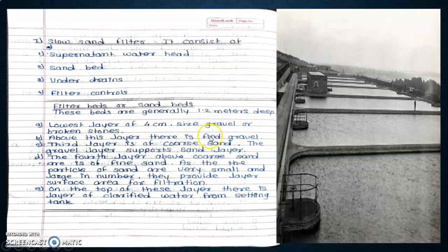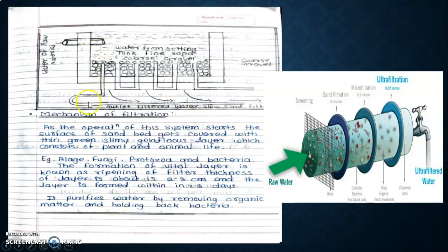Above this layer, there is fine gravel. The third layer is coarse sand. The gravel layer supports the sand layer. The fourth layer above coarse sand is of fine sand. As the particles of sand are very small and large in number, they provide large surface for filtration. On top of this layer, there is a layer of clarified water from the settling tank.